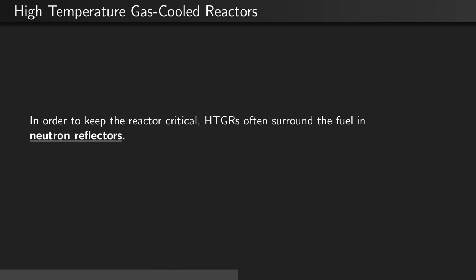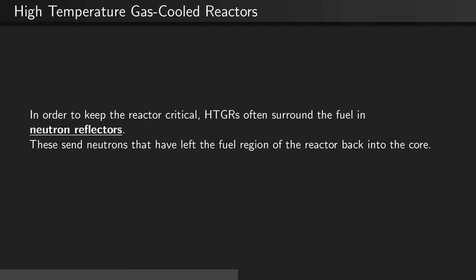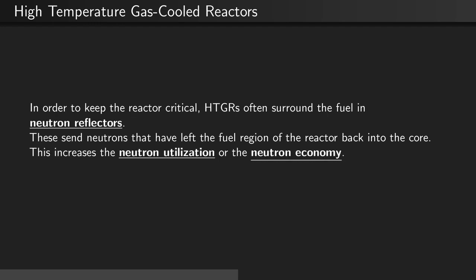In order to keep the reactor critical, high temperature gas reactors often surround the fuel in neutron reflectors. These neutron reflectors send neutrons that have left the fuel region of the reactor back into the core region. This increases the neutron utilization, or what is called the neutron economy.